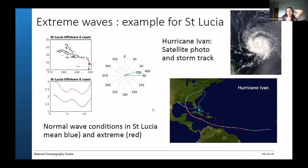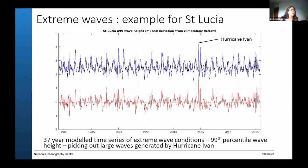One of the good things about interrogating these models is that you can have decades of data. Hindcasts have been run into the past from around 30-35 years plus now, so you can dig into them and look at extreme events in the context of climatologies. You can look at a single hurricane and say how rare is this. Looking into these long model hindcasts, you can see a time series - this is 37 years of significant wave height at the top.